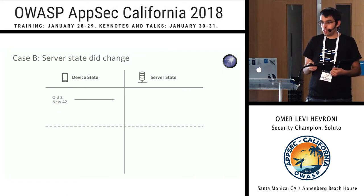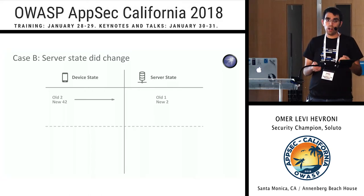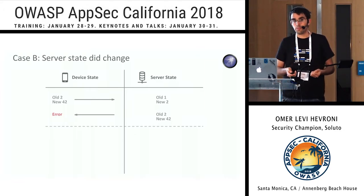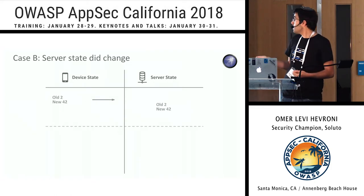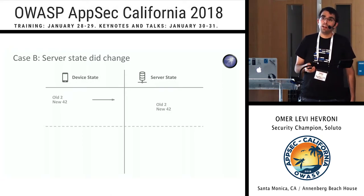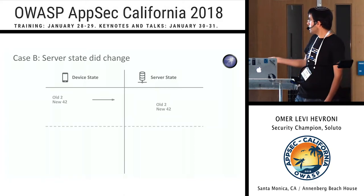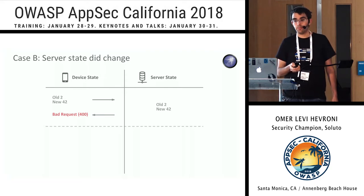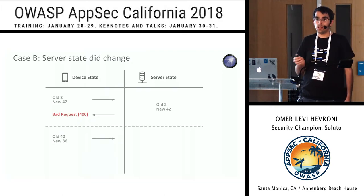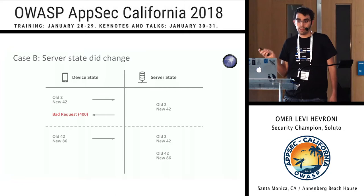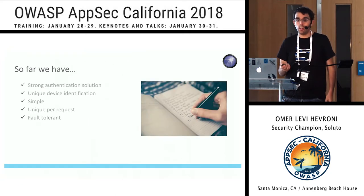The more complex case is where the server state did change. The device sent the payload, the server compared old and new - they were equal - the server updated its database. But for some reason the device didn't receive the token. If the device retries, the request is not valid because old does not equal old anymore. But the server recognizes this as a special case: the entire payload is identical - old equals old, new equals new. So the server returns a 400 Bad Request to the client. The client is expecting this 400, and in that case it just rolls the payload. After rolling, the request is valid again - 42 equals 42. The server updates its state and the client gets a token. This is how our protocol is fault tolerant.